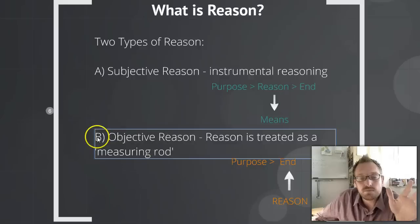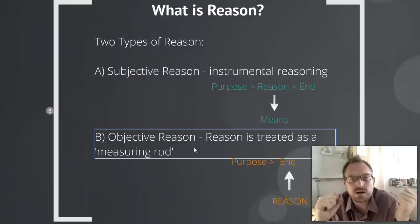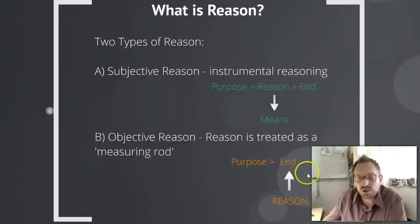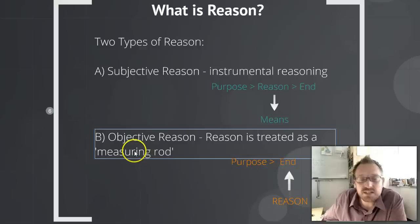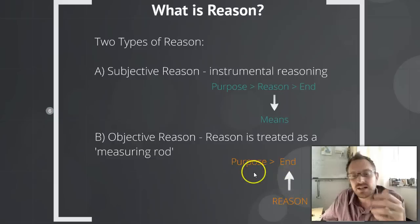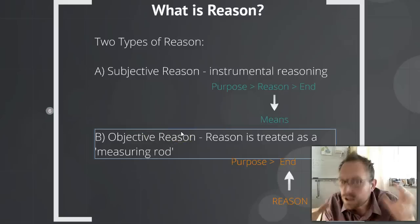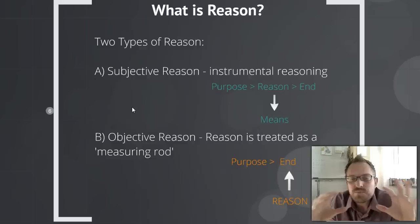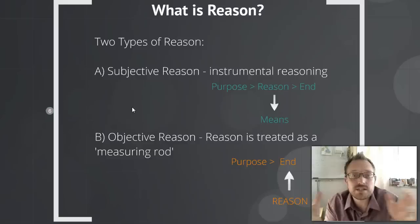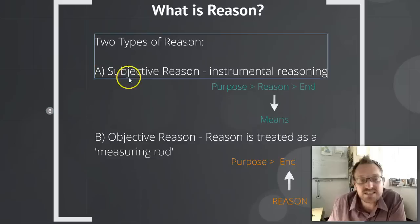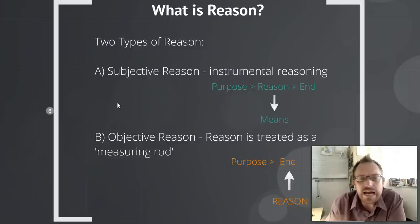Let's contrast that with the second type of reason, what we might call objective reason. Here, reason is treated as a measuring rod — it allows us to determine what our ends should be, what our purposes should be. So in subjective reason, reason becomes a means or an instrument. In objective reason, reason becomes something of a criterion — a way to distinguish which ends are worth pursuing and which purposes are worth having. What Horkheimer will ultimately argue is that even though both of these have always existed in human life, through a dialectical process, objective reason has essentially dropped out of the equation and all we're left with today is subjective reasoning.